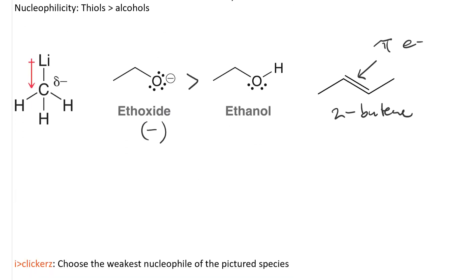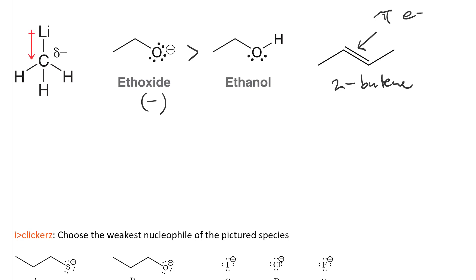It should also be noted, thiols are stronger nucleophiles than alcohols. In fact, anything with sulfur is a stronger nucleophile than anything with oxygen. This is because sulfur is more polarizable than oxygen, because it has a larger electron cloud. So, ethylthiolate is a stronger nucleophile than ethoxide, or than ethanol. And, because sulfur is so much more polarizable than oxygen, ethyol is a better nucleophile than ethoxide.